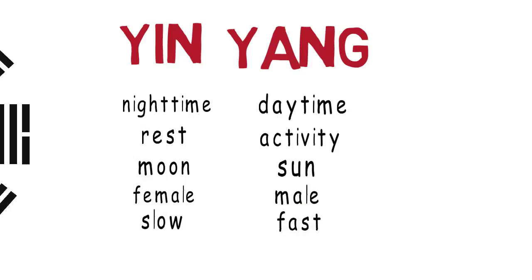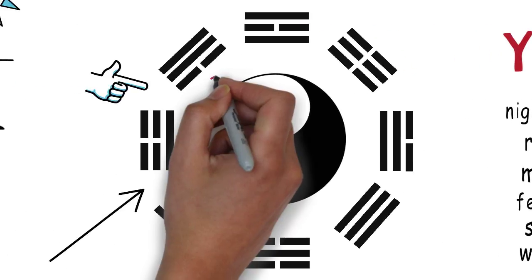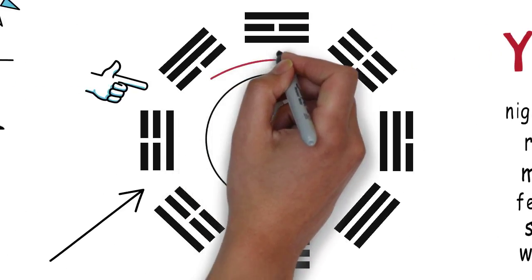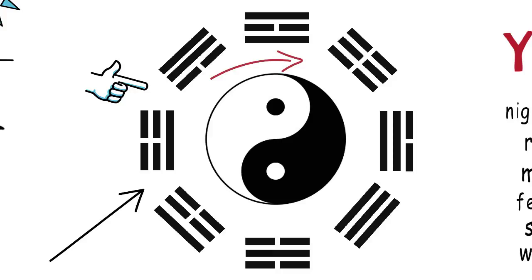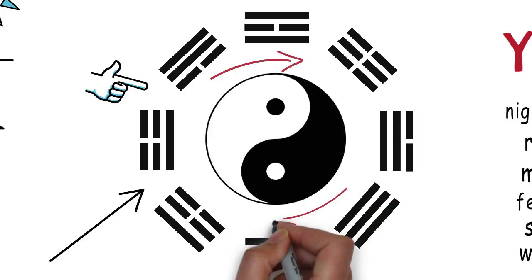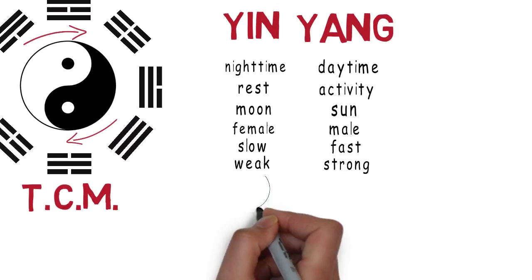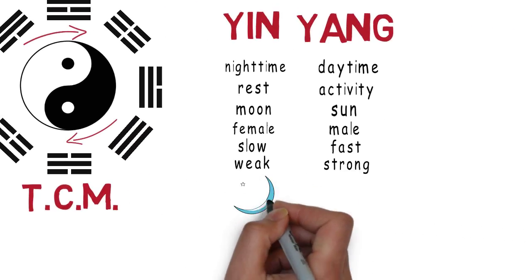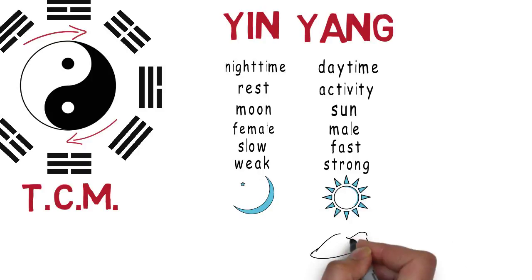In fact, everything in life can be brought down to yin or yang. Although yin and yang are opposites, they also transform into each other, which is reflected in the well-known symbol. Night will always become day, winter will always become summer, and activity is always followed by rest.